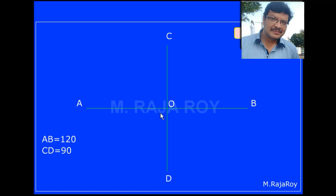Draw a line AB of 120 length and locate midpoint O. From O, draw a perpendicular to AB of 90 length and call it CD. CD will represent the minor axis. The next step is locating the focal points F1 and F2.